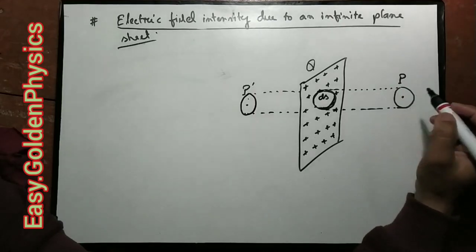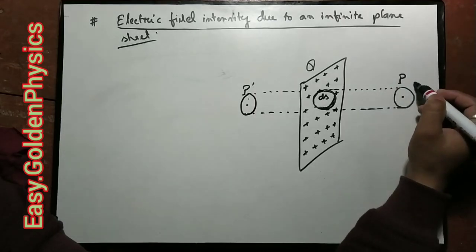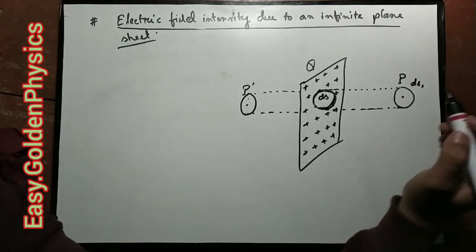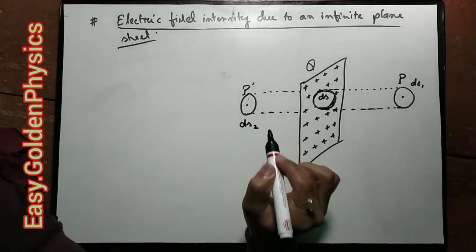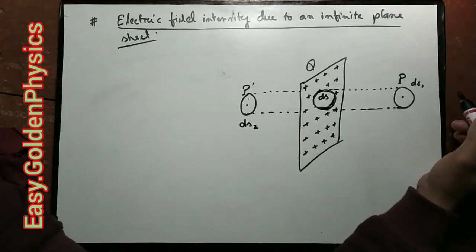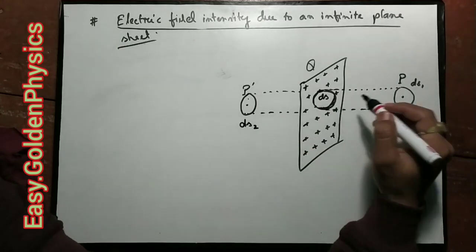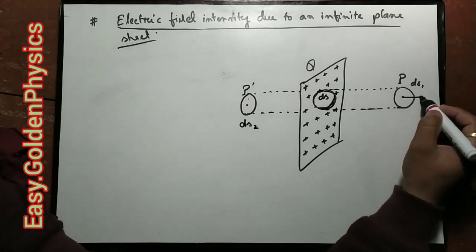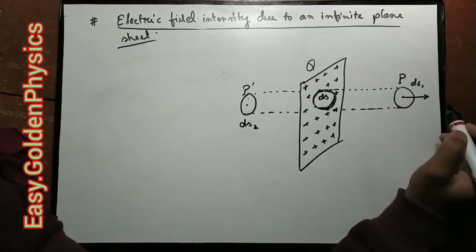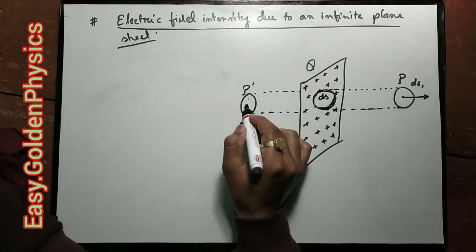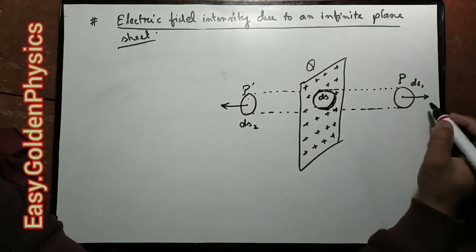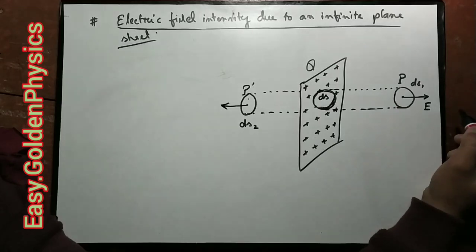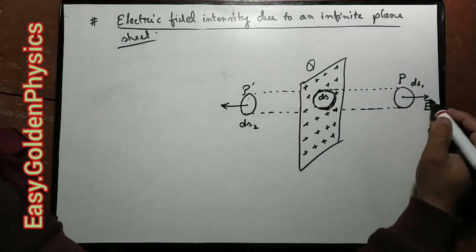The curved surface is DS1 and the curved surface is DS2. This is the electric field. The radial field is the output of the electric field.